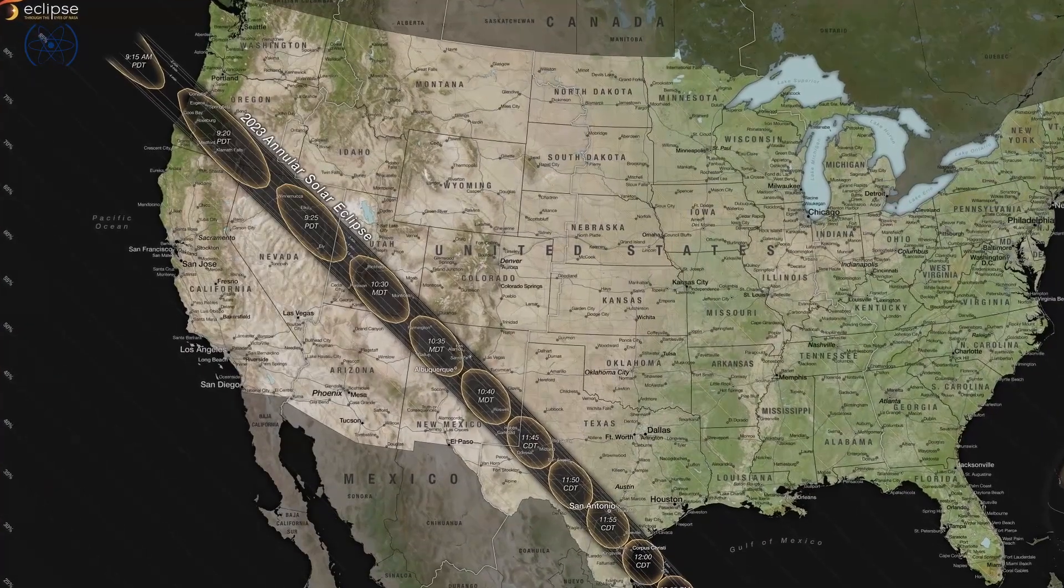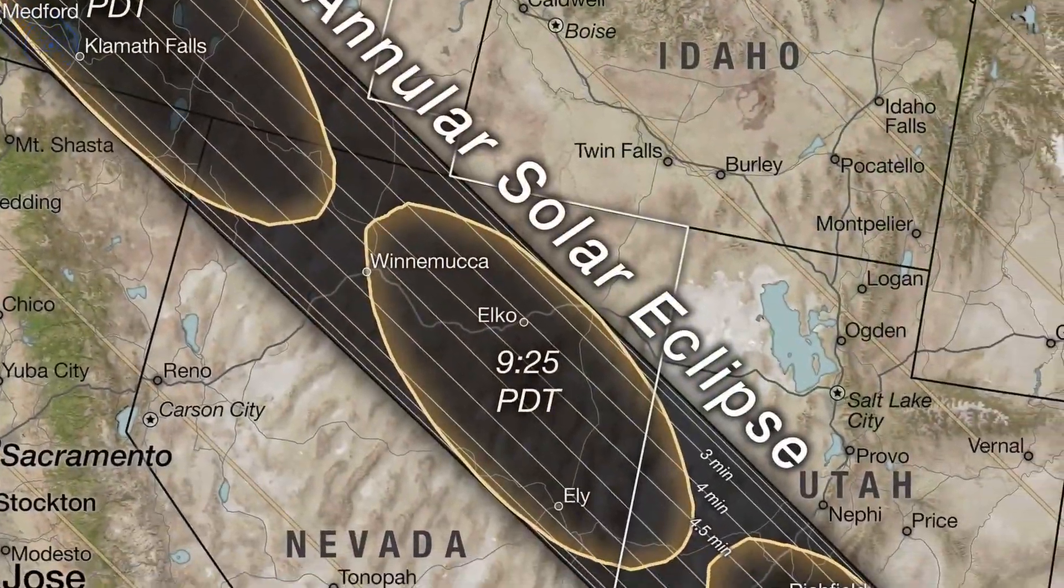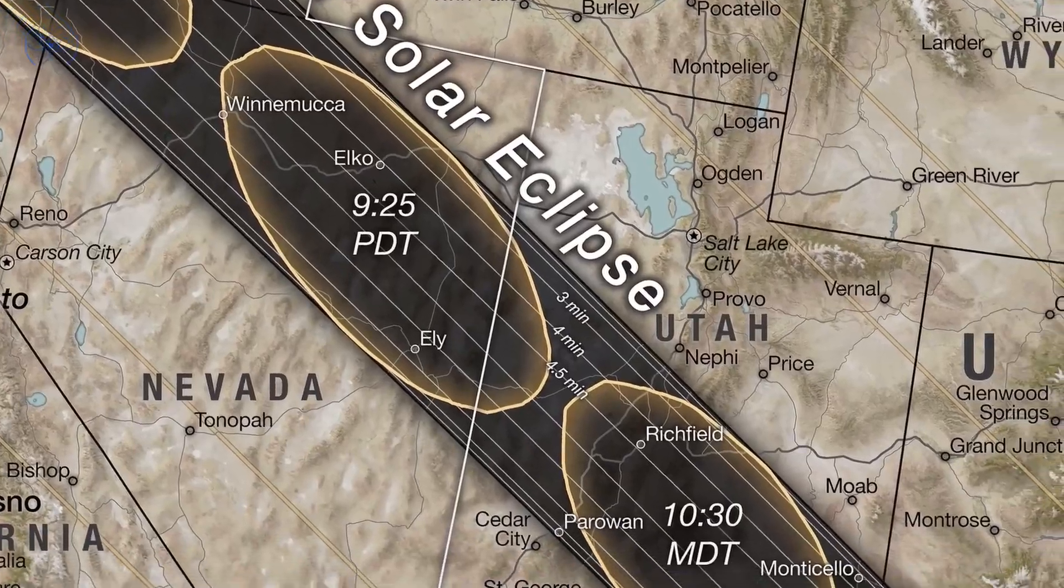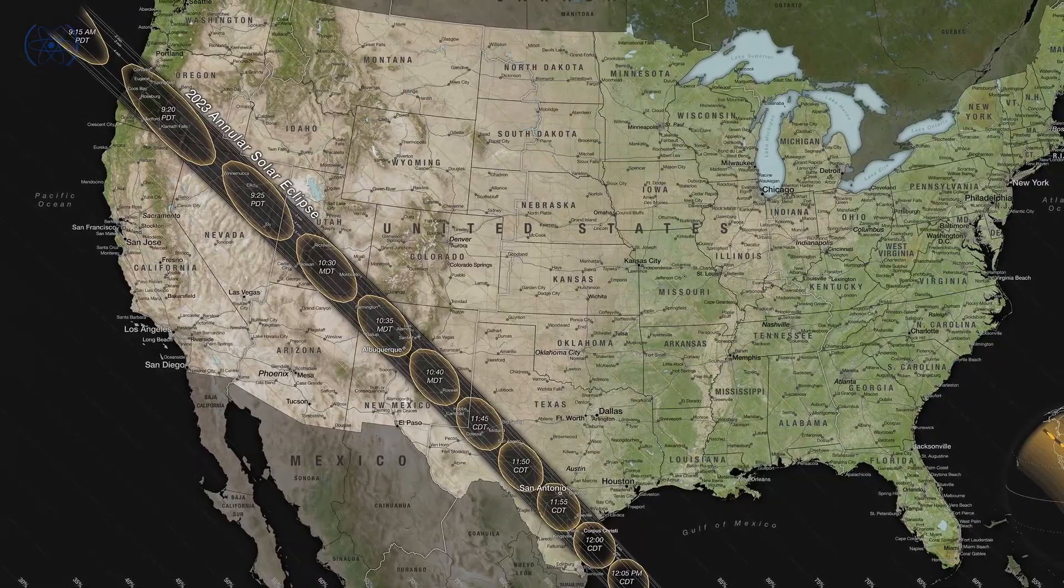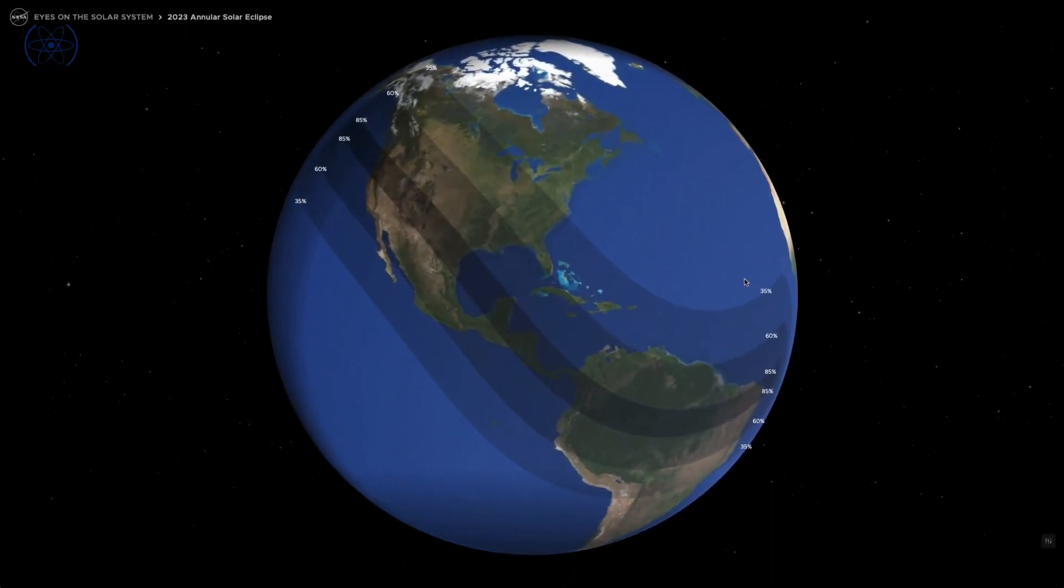The eclipse will begin off the coast of southern Canada in the Pacific and move across the southwest United States and Central America. A partial eclipse may be viewable from other regions of North and South America.